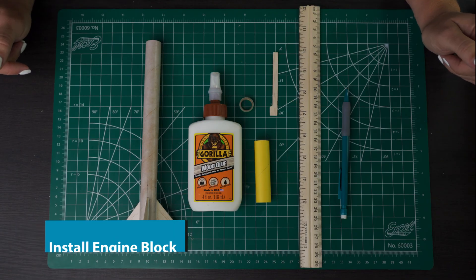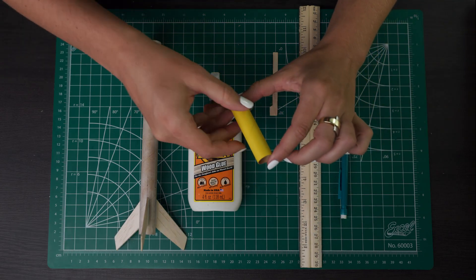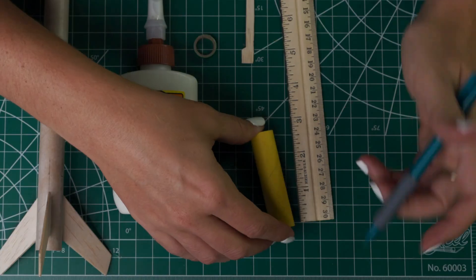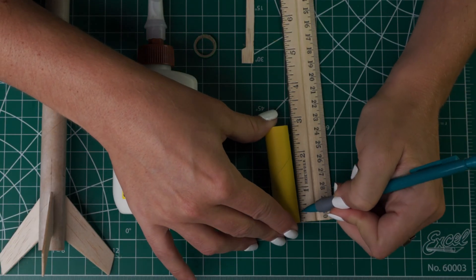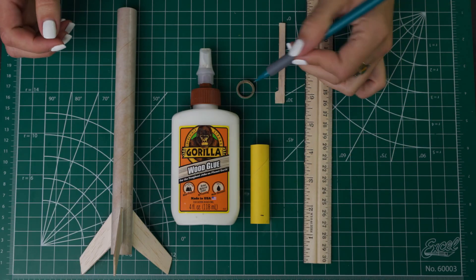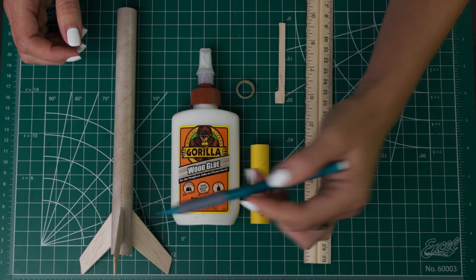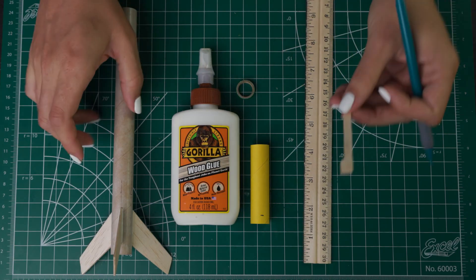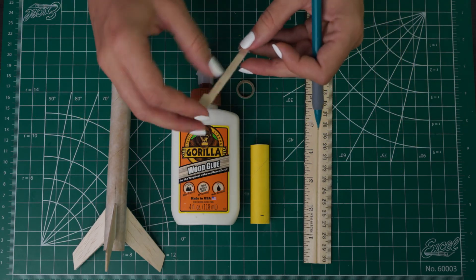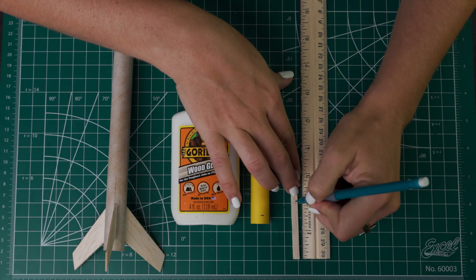Next up we're going to install the engine block. First take your yellow spacer tool and we're going to put a mark on this at a quarter of an inch. Then we're going to be putting the engine block in the body tube here and we want it to be two inches up. I'm going to be applying glue to the inside of the body tube with just this scrap piece of balsa wood but I'm going to make a mark on this at two inches so I know how far to put it.